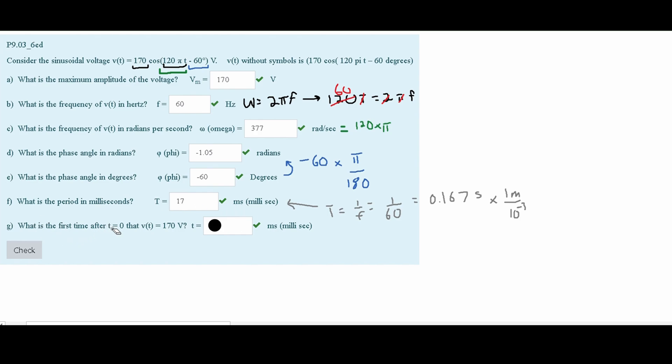Lastly, we are asked what is the time after T equals 0 that our Vt equals 170 volts. So we are given our equation right here. And now we need to plug 170 in for our voltage. So on the left side, we will have 170 volts is equal to our 170 times the cosine of our omega, which is known to be 120π, times T minus the 60 degrees. And this is for volts.